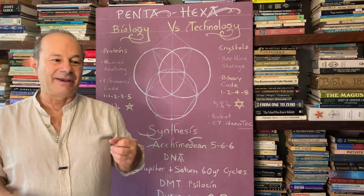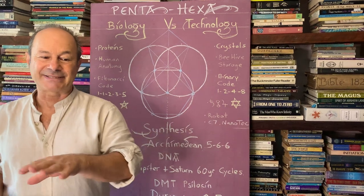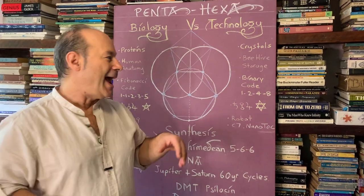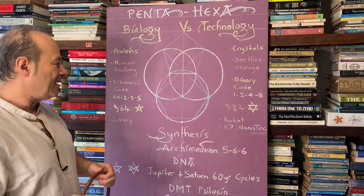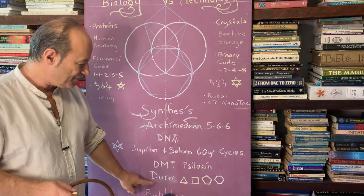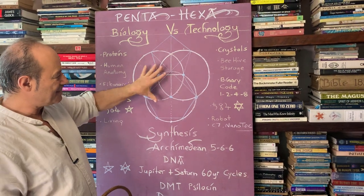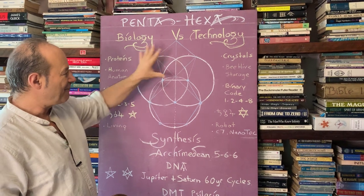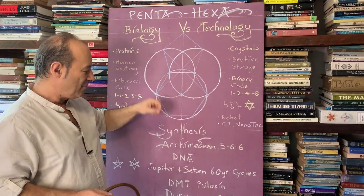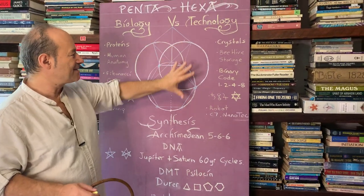I'd like to discourse on the amazing connection between the five and the six, and in geometry we call that Penta-Hexa. From the Renaissance there's an amazing artist by the name of Albrecht Dürer, and Dürer gave us this design. From this creation of the hexagon and the pentagon we're able to create the triangle, the square, the pentagon, and the hexagon — so this is like the mother of all form.